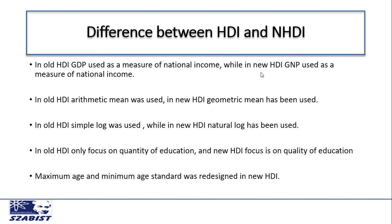While in new HDI, GNP replaces GDP for the measurement of national income. So this is the first difference: in old HDI, GDP has been used for the measurement of national income, but in new HDI, GNP has been used for the measurement of national income.